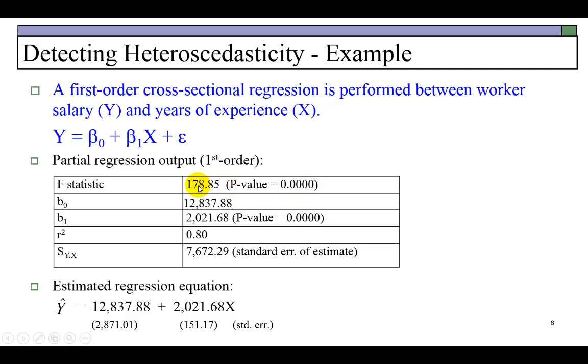First off, the regression is statistically significant, as you can see here, based on the F statistic. And also we can see that 80% of the variation in worker salary is explained by years of experience. So we're happy with this. Or are we? We're going to have to do some diagnostics before we run away with this estimated regression equation.